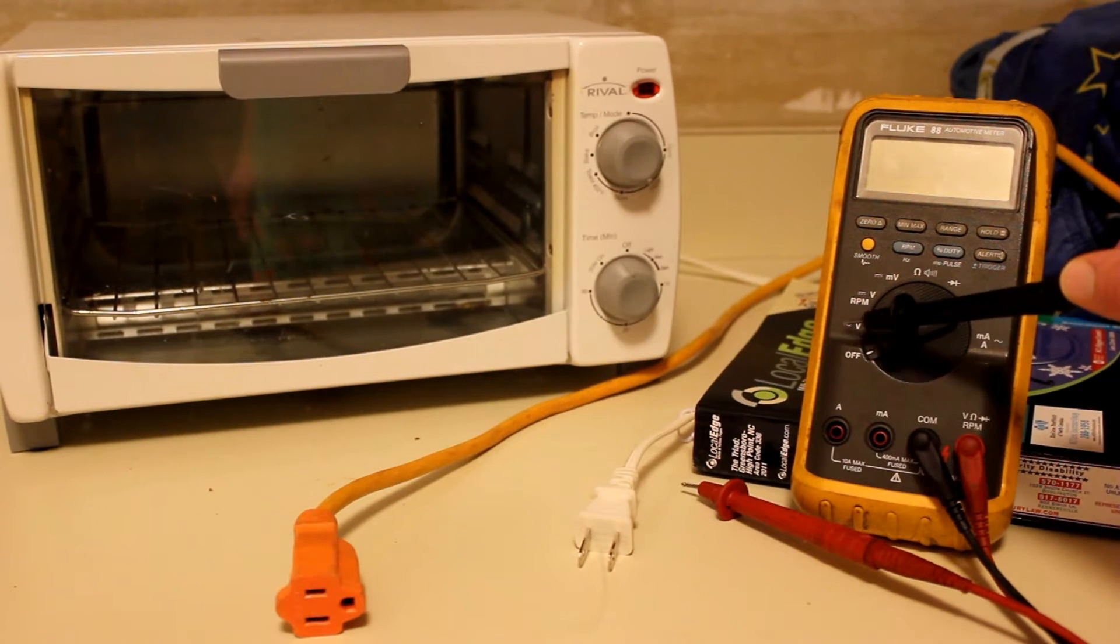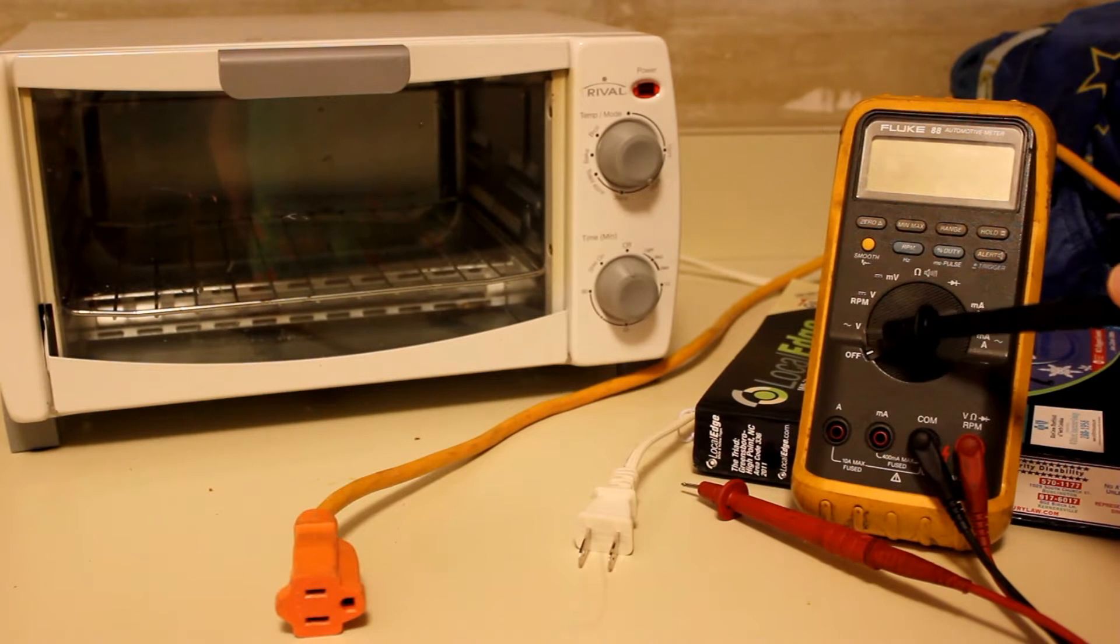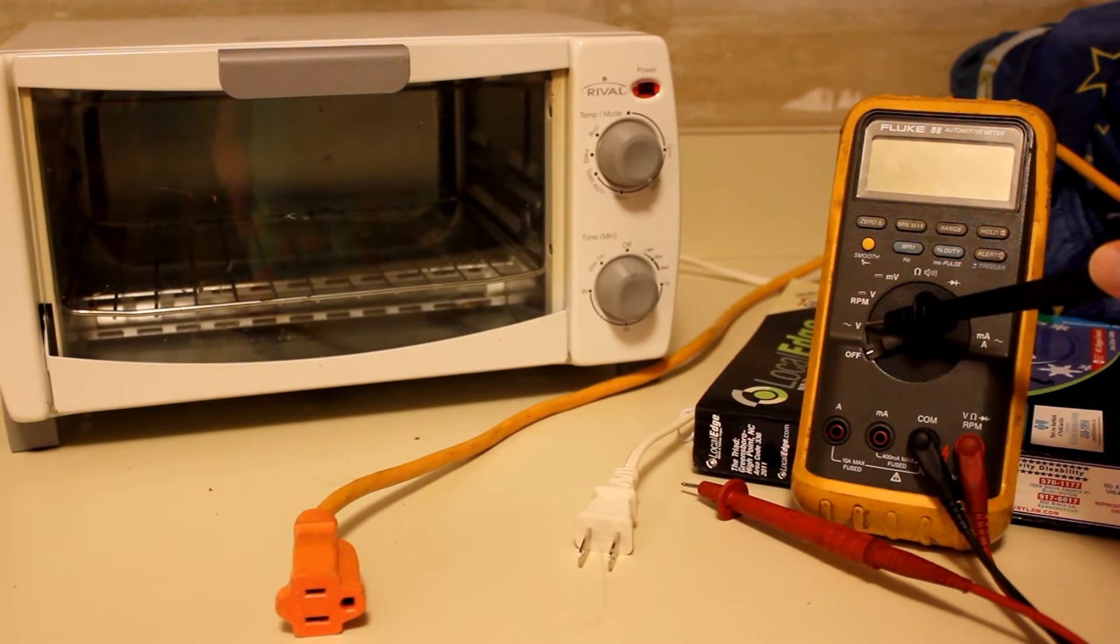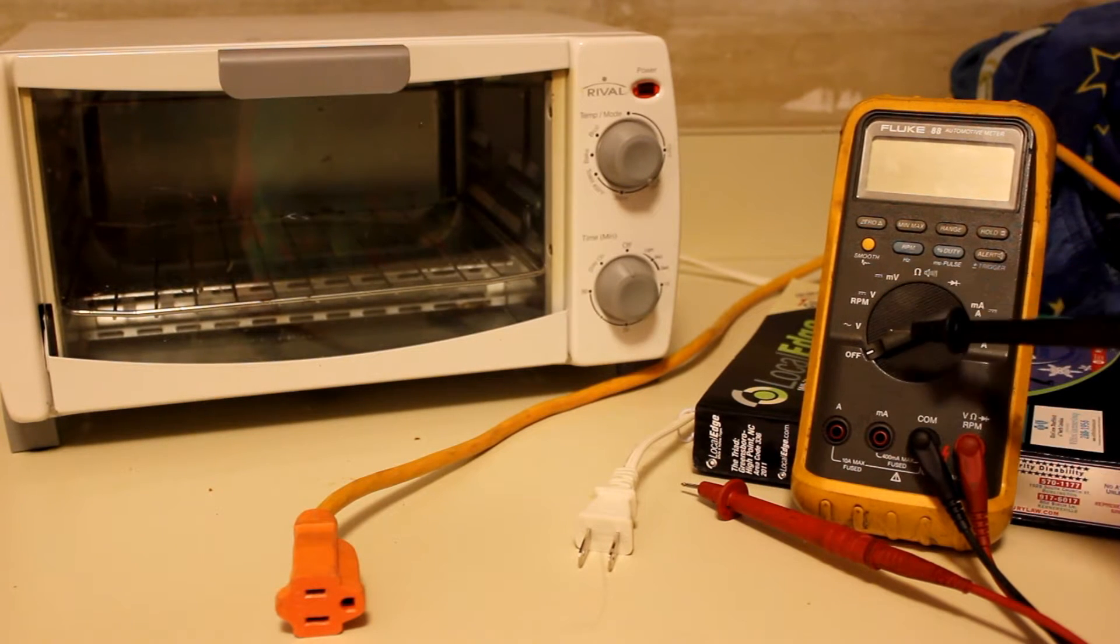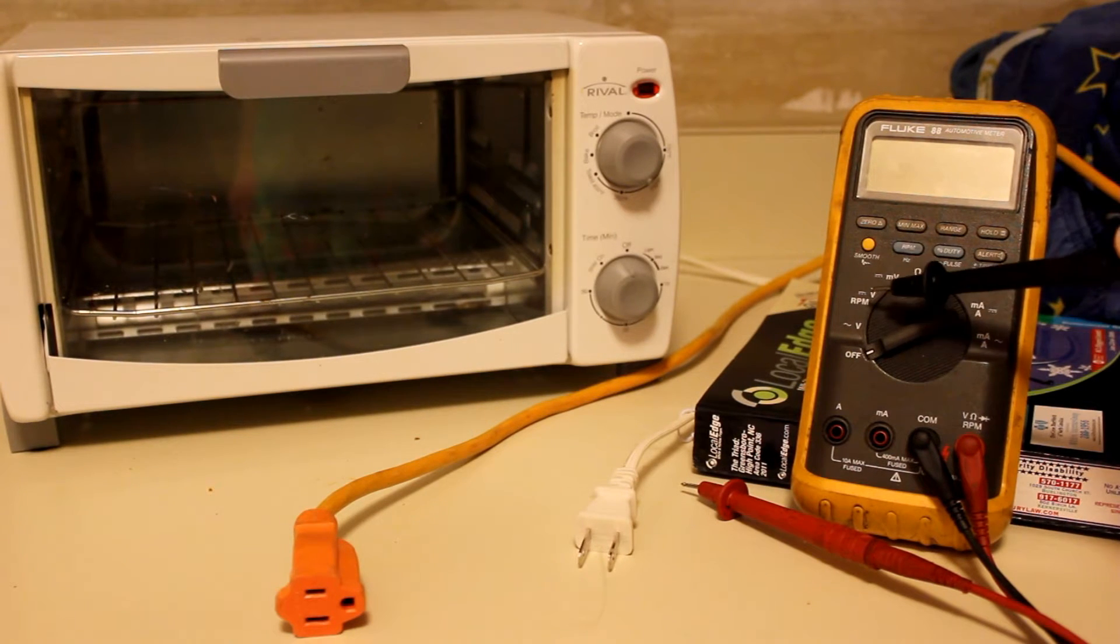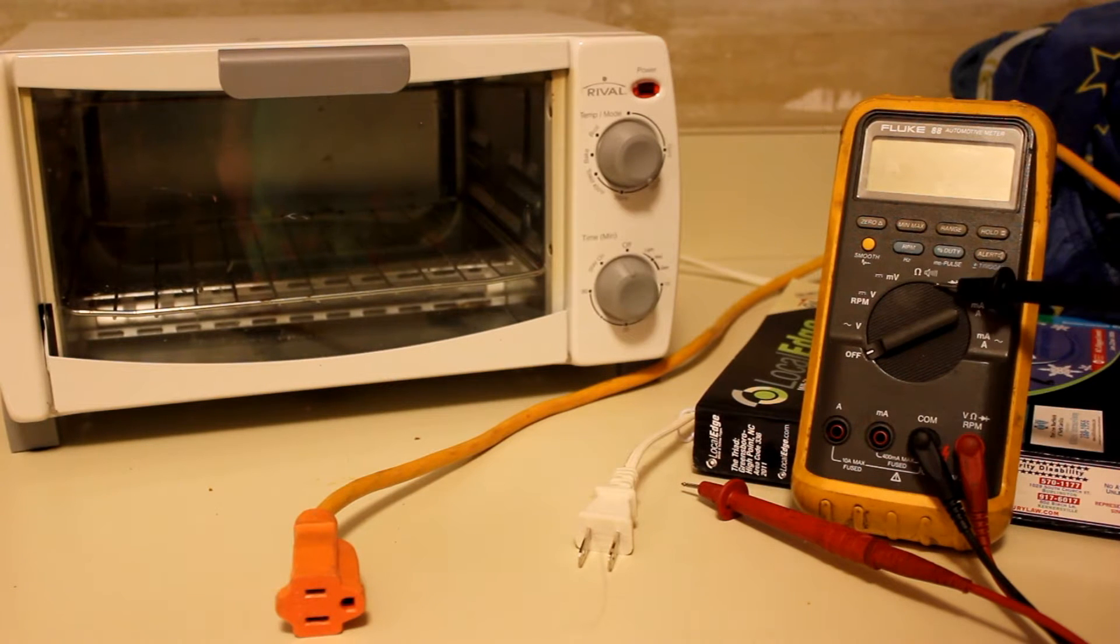The first thing we got here: you're going to see the V with a little squiggly line, and that means that's going to help you measure AC voltage. Then you got the line and then the little dashed lines, and that's going to help you measure direct volts.